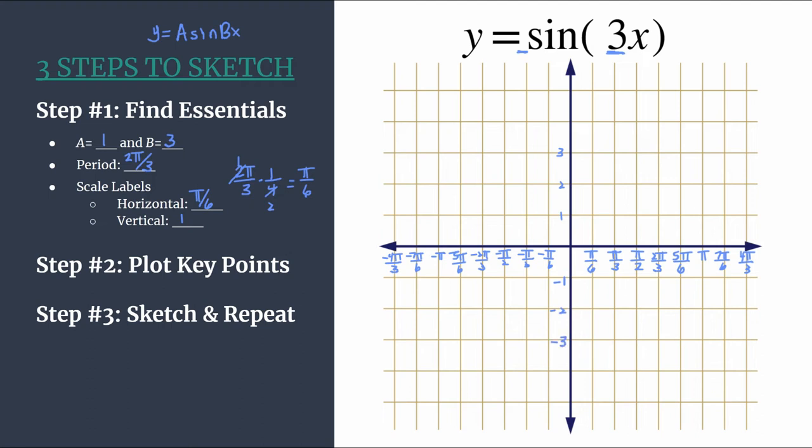We have found our essential information. We should feel like we really understand what is going on with this equation and how the graph should look. So we can move on to the easy steps. Step two, we'll plot our key points. Our key points for a sine equation will always follow the same pattern. Notice we don't have a negative out front, so we know we follow the original pattern here, which is zero, maximum, zero, minimum, repeat.